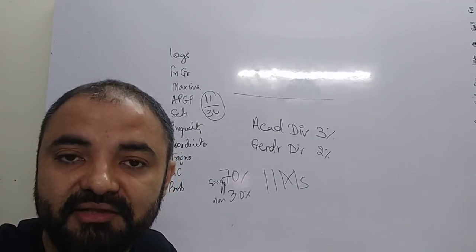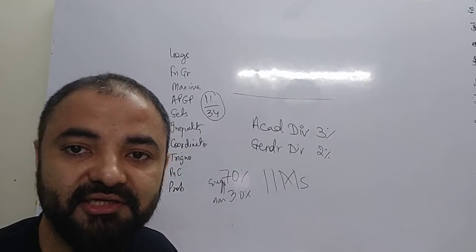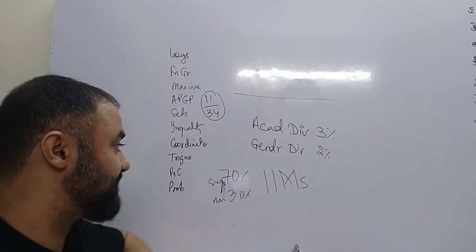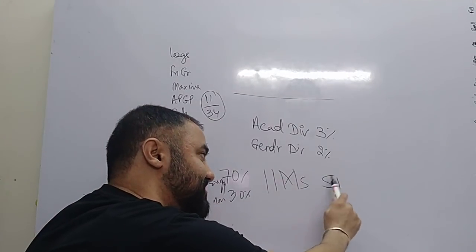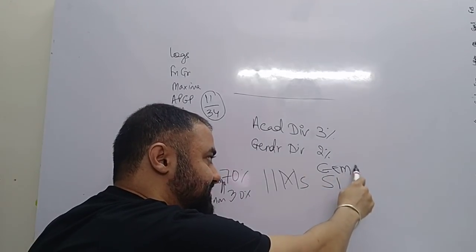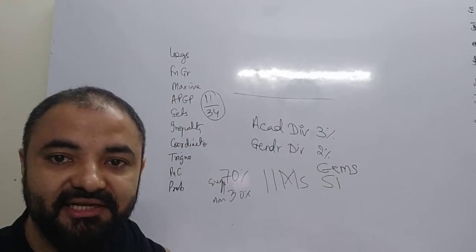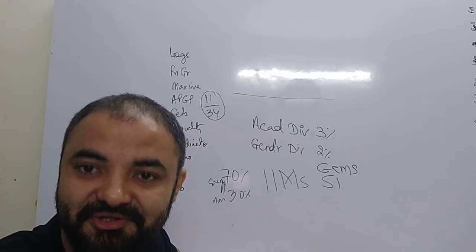So summary is 5% extra marks if you are a non-engineer. Today's most important thing is GEMS. GEMS: General, Engineer, Male, and Single. So if you are a GEM,